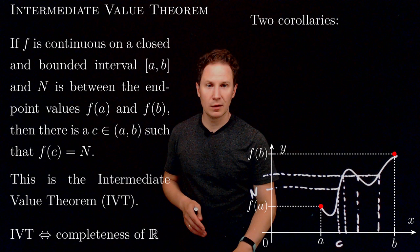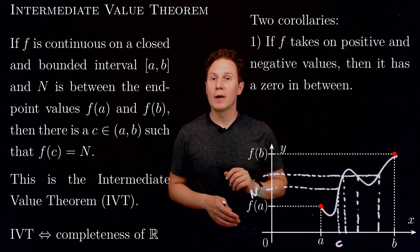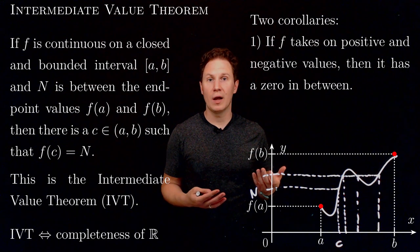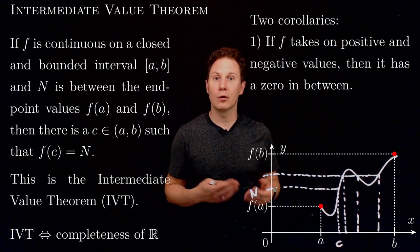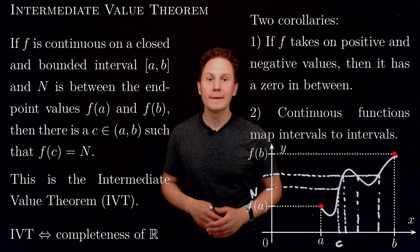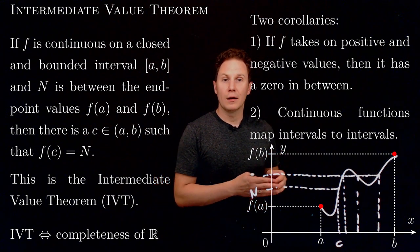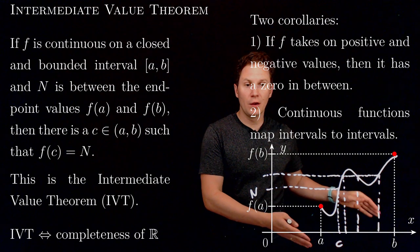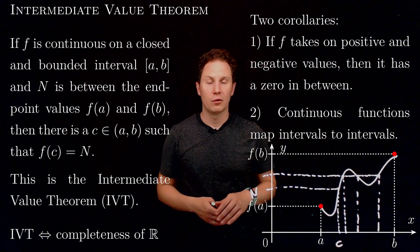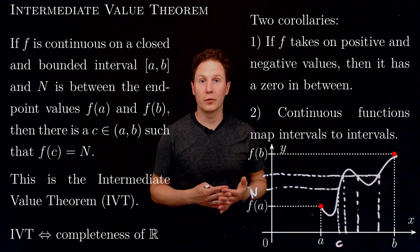The IVT has some very nice corollaries. First, if the endpoint values happen to be negative and positive, then zero is an intermediate value, so the function must equal zero somewhere between the endpoints. Second, continuous functions map intervals along the x-axis to intervals along the y-axis. This is a very nice property of continuous functions.